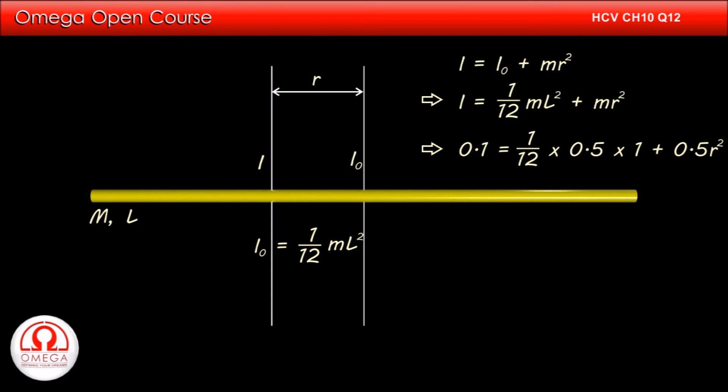Putting the values, we get 0.1 = (1/12) × 0.5 × 1 + 0.5 × r². Simplifying, we get r² = 7/60.